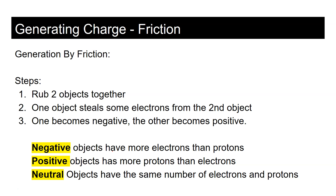To reiterate: negative objects have more electrons than protons; positive objects have more protons than electrons; and neutral objects have the same number of electrons and protons. When charging by friction, you rub two objects together — one steals electrons from the other, one becomes negative, one becomes positive.